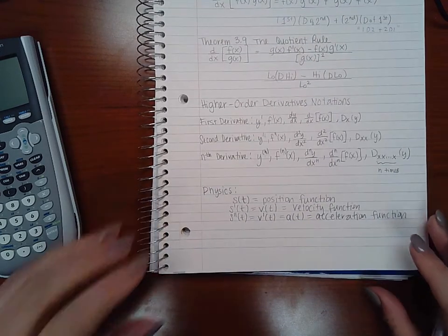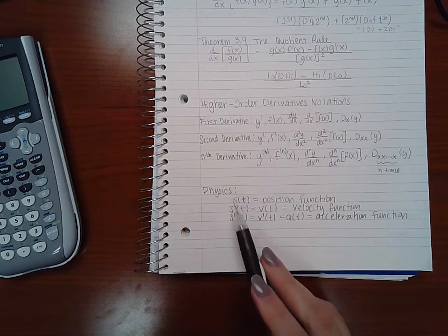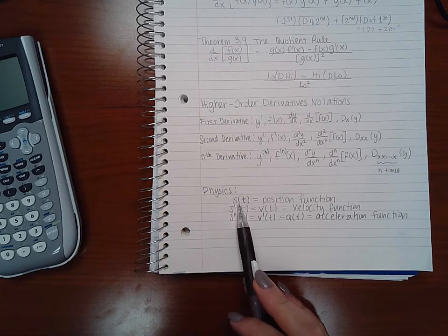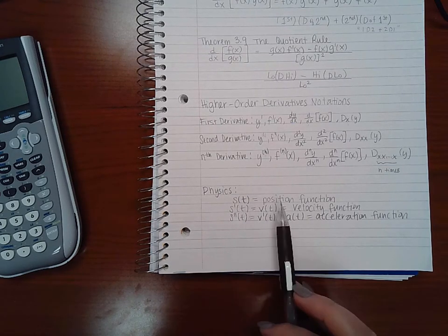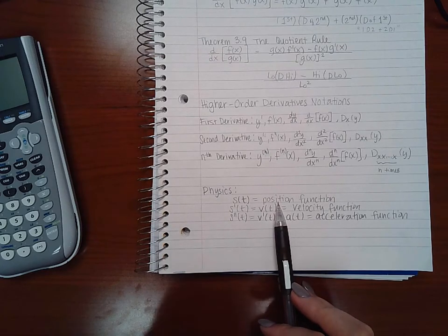In physics, we use derivatives a lot. So your original function s(t) is called the position function or location function.